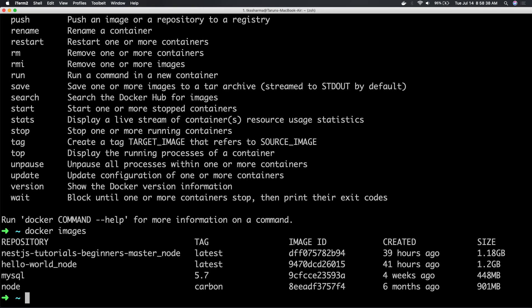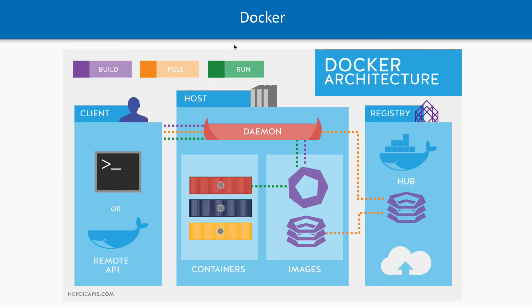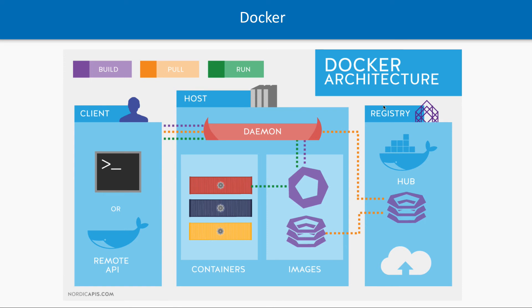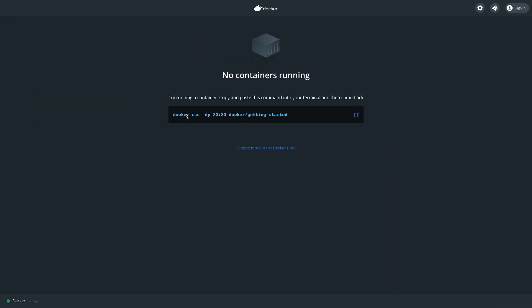These are Docker container images. Once you build these images, they will become containers — we will talk about that in coming sessions. This is the main architecture you should understand clearly. We downloaded Docker, installed it, and Docker is running on our system. The Docker daemon process is running, we have some images, and we will be building containers from those images. When you do the build command, or the docker pull command...